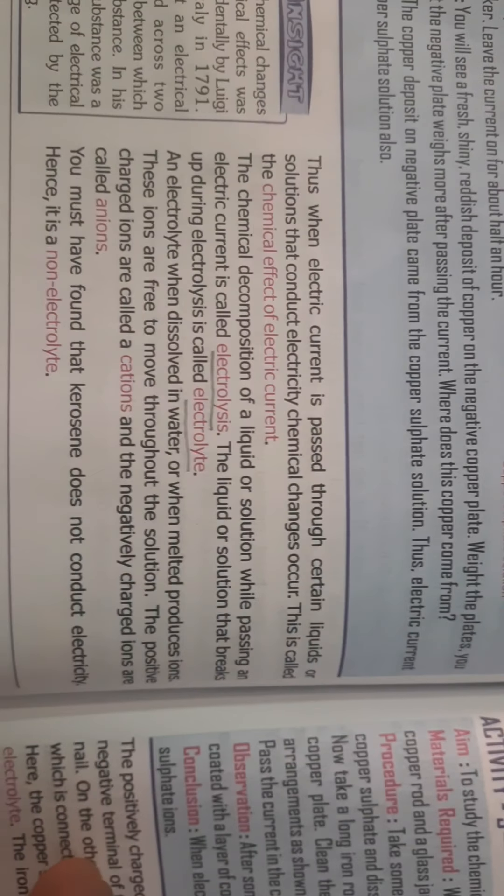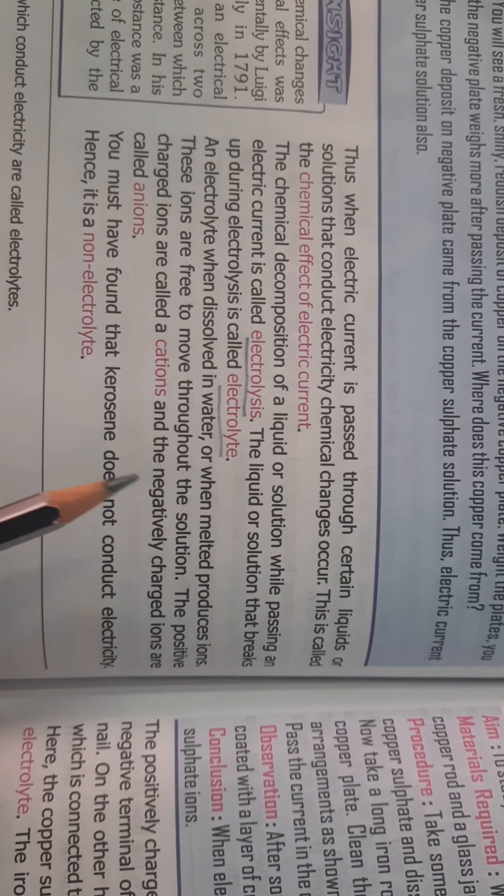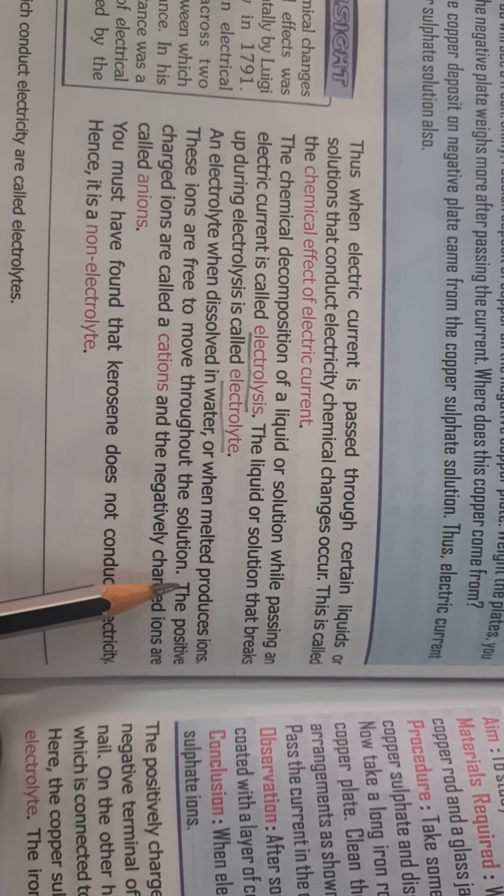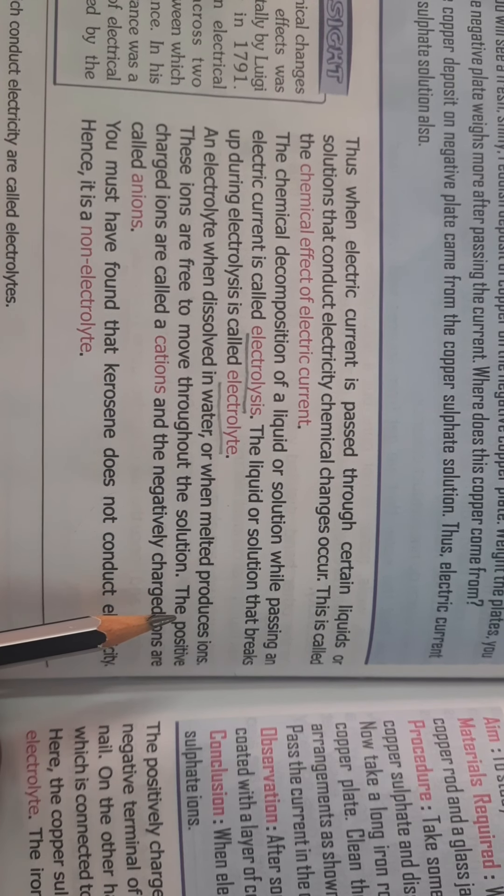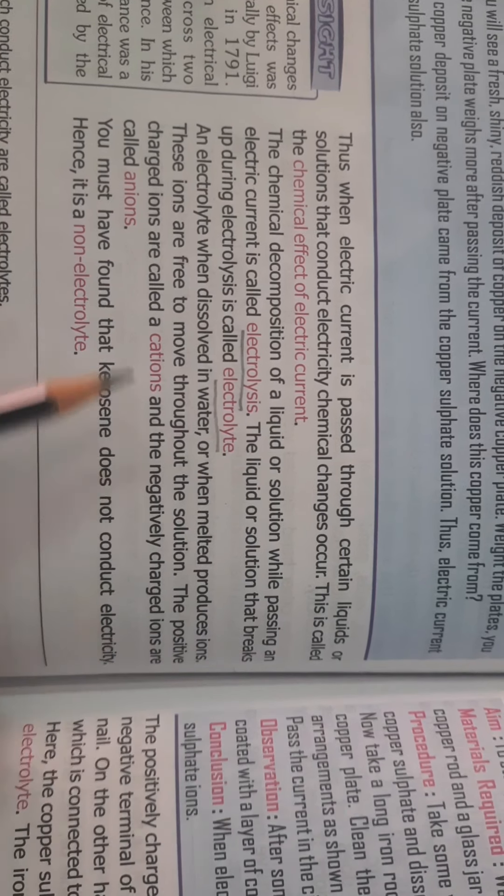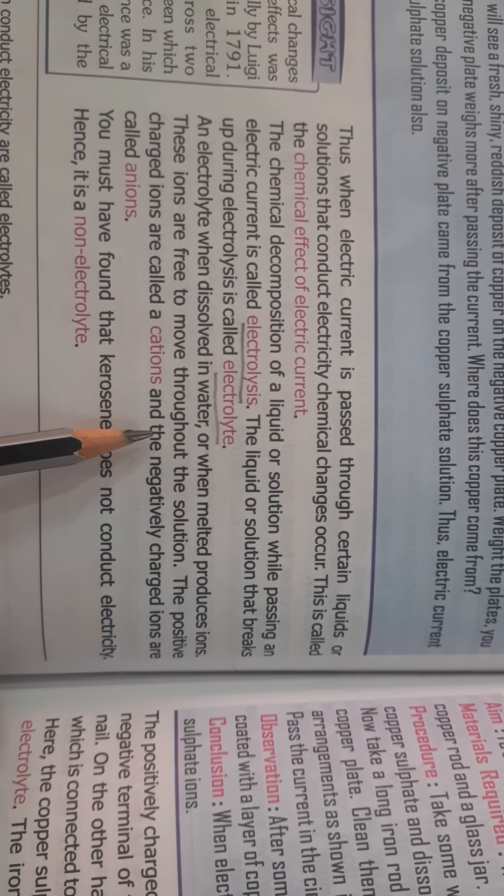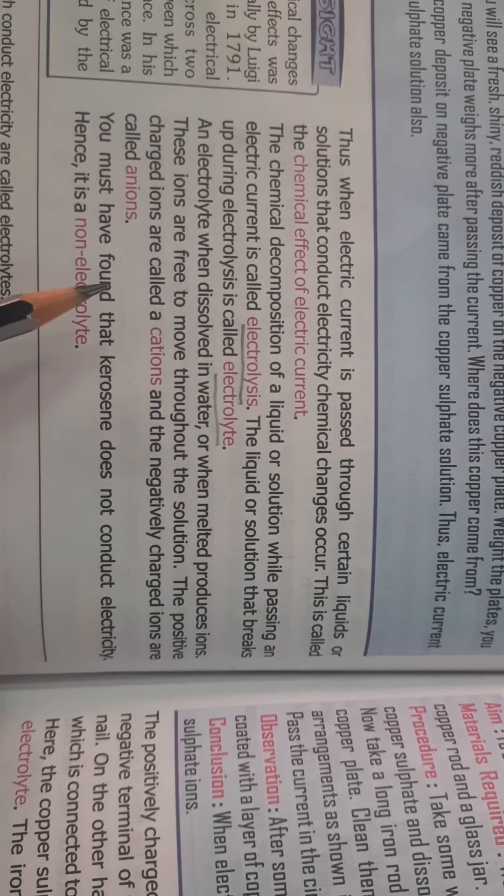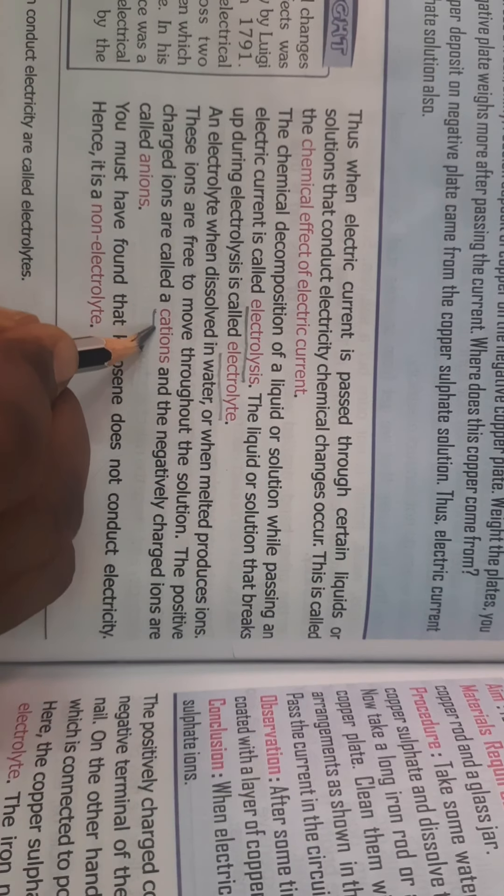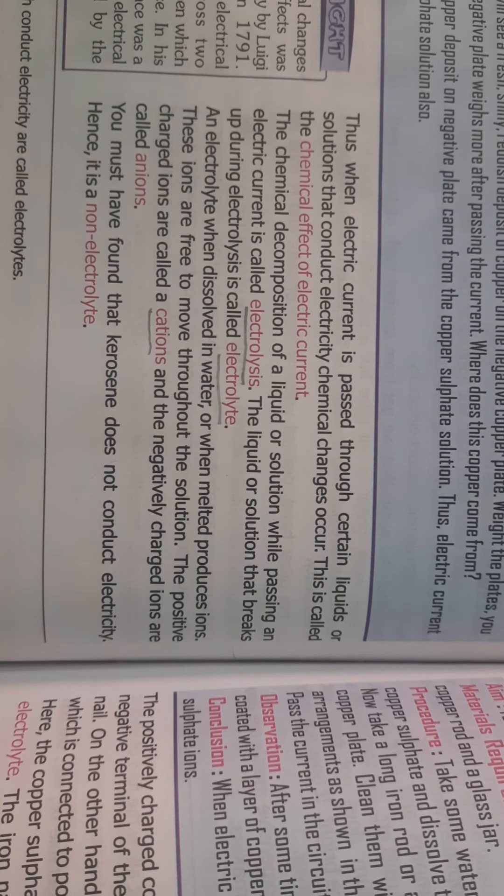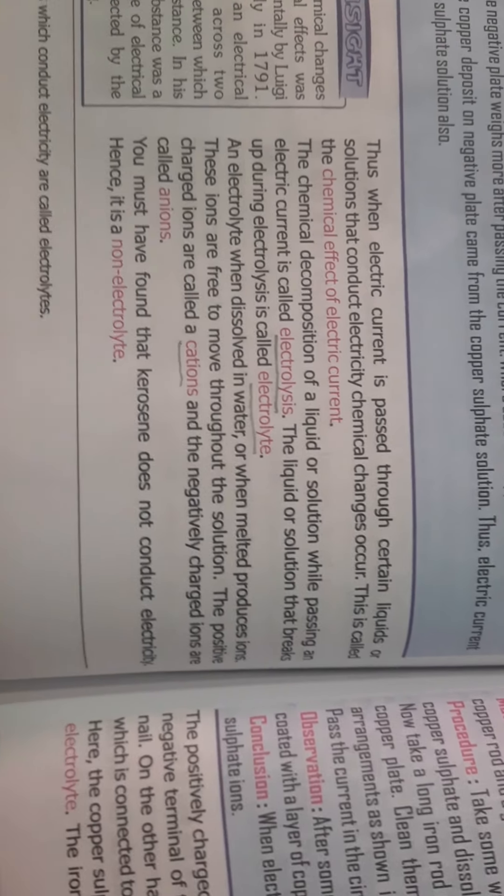An electrolyte, when it is dissolved in water or when melted, starts producing ions. Ions means positive and negative charged particles, and these ions are free to move throughout the solution. The positive ions are called cations and the negatively charged ions are called anions.